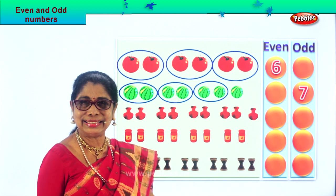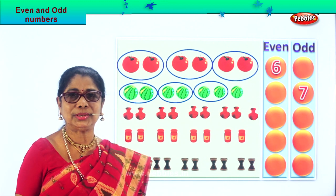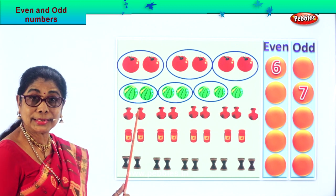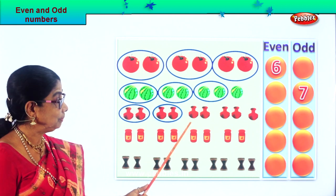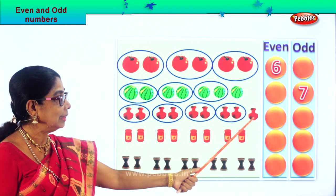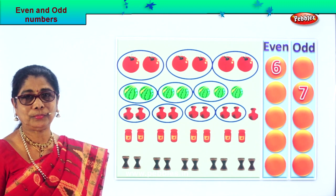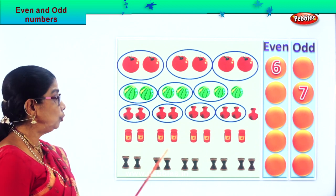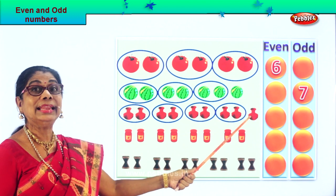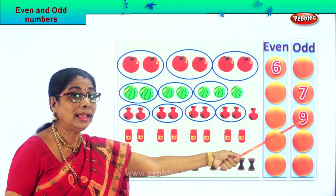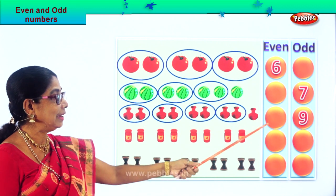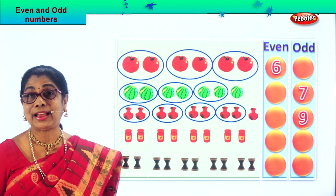Very interesting exercise, isn't it? Now we have some nice clay pots. Shall we count them in twos and give them partners? One, two — circle; one, two — circle; one, two — circle; one, two — circle. And there is an odd one — one single pot left. Count in twos: two, four, six, eight, and one more — nine. Nine is an odd number because the last pot doesn't have a partner.